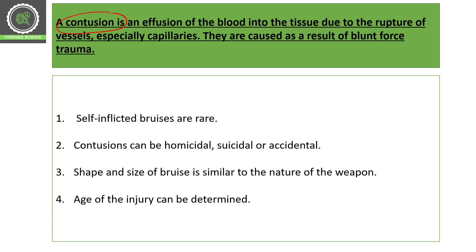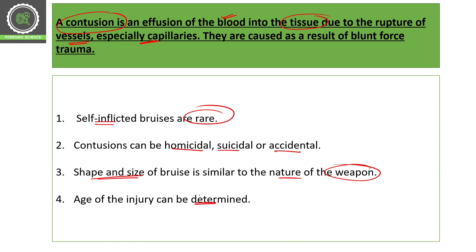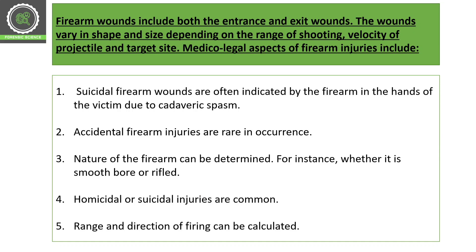Contusion occurs when a blunt impact causes diffusion of blood into the tissue due to rupture of vessels beneath the skin, especially capillaries. This causes the visible bluish discoloration on the skin. Self-inflicted bruises are rare. Conditions can be homicidal, suicidal, or accidental. The shape and size of bruises may be similar to the nature of the weapon, helping link weapons to injuries. The age of injury can also be determined.